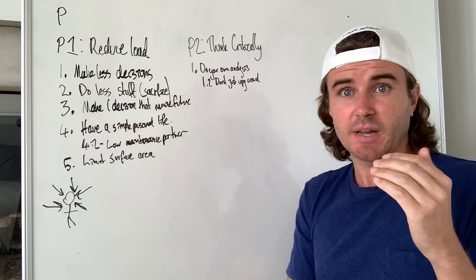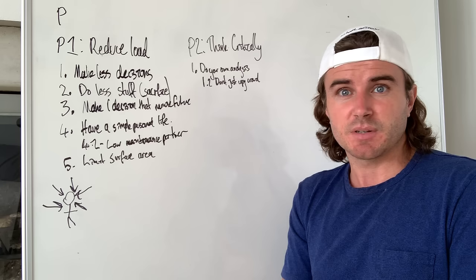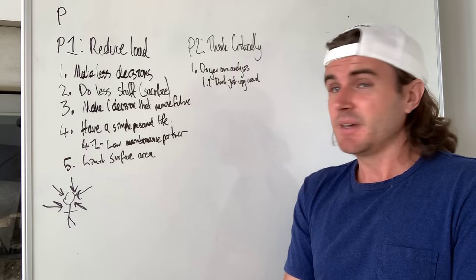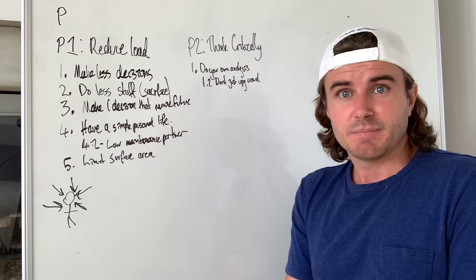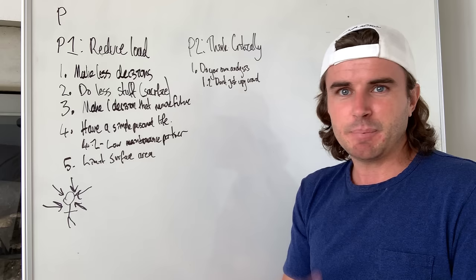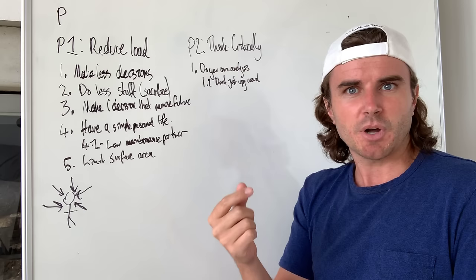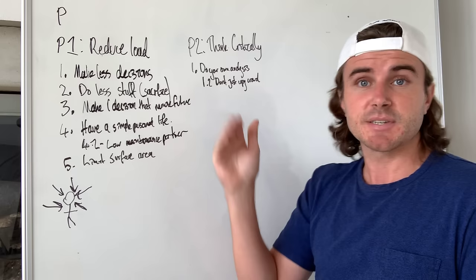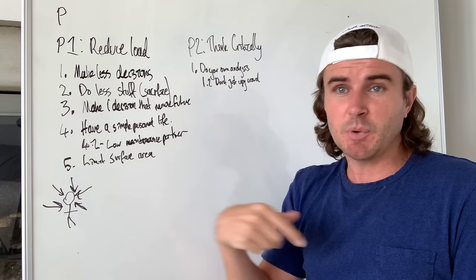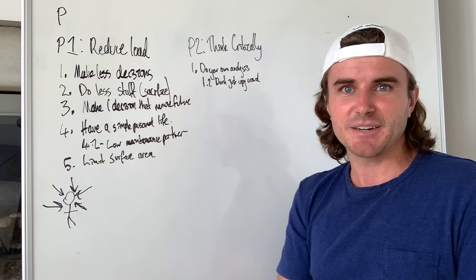The first element of thinking critically is to do your own analysis — don't just copy the crowd. If you want to achieve anything great, it's going to come from doing something abnormal. Everyone that's ever done anything great basically didn't copy anyone else. Some people try to copy me by copying exactly what I do — but my strategy IS to do something different and not copy others. So if someone comes along and copies exactly what I do, they've totally missed the point.